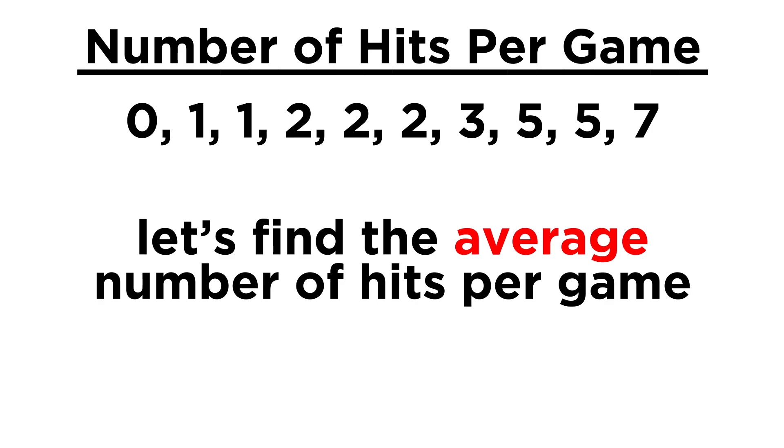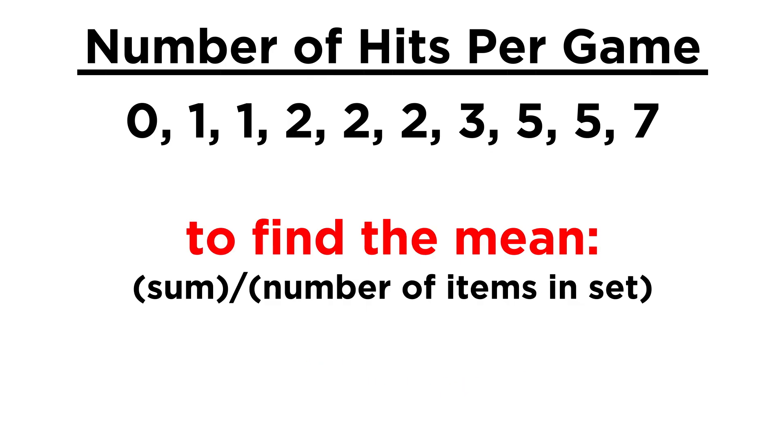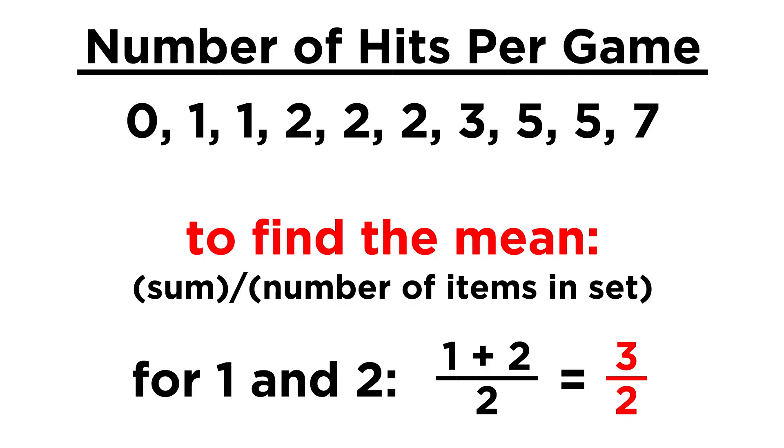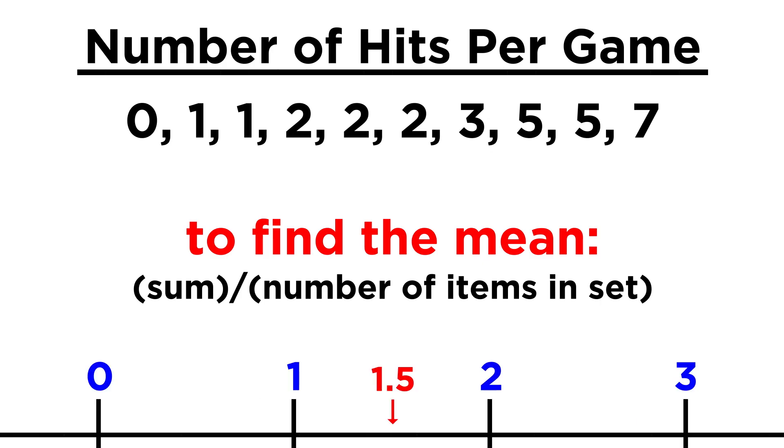Then we might wonder about your average number of hits per game. When we say average in this way, we are typically referring to the mean of a dataset. To find the mean of a set of numbers, we just add up all the numbers and then divide by the number of items in the set. So for instance, the average of one and two would be one plus two divided by two, because there are two numbers in the set. Three halves is one point five, precisely in between one and two, which makes sense as the average of one and two.